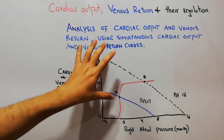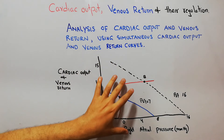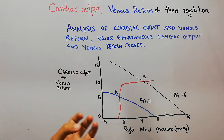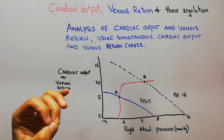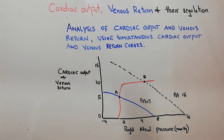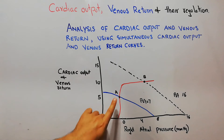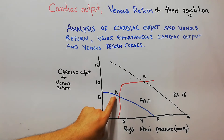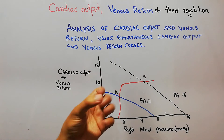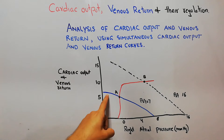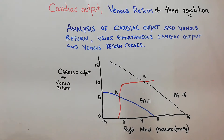Now we are going to plot both curves together and determine the equilibrium point at which the cardiac output equals venous return. Normally in a human being, the cardiac output — the amount of blood pumped by the heart every minute — must equal the amount of blood returning to the heart every minute.